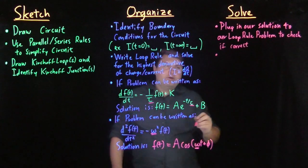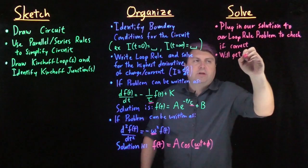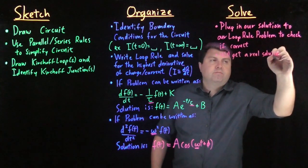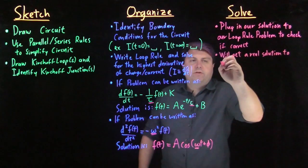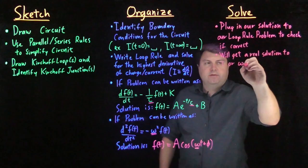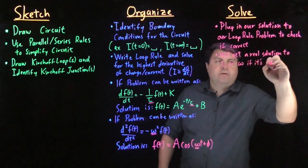How do we check if it's correct? We should get a real solution to tau or omega if it's the correct solution.